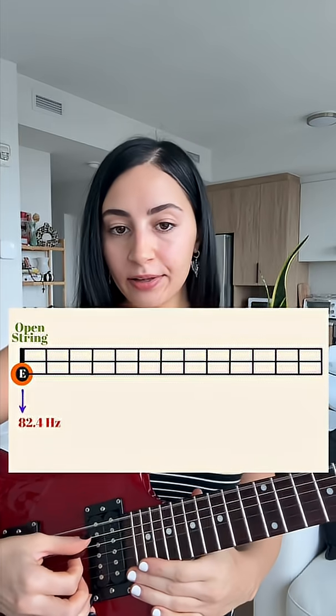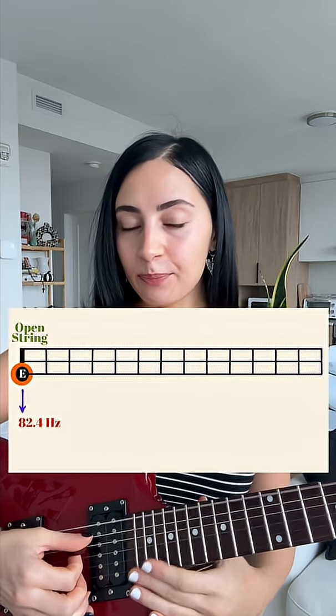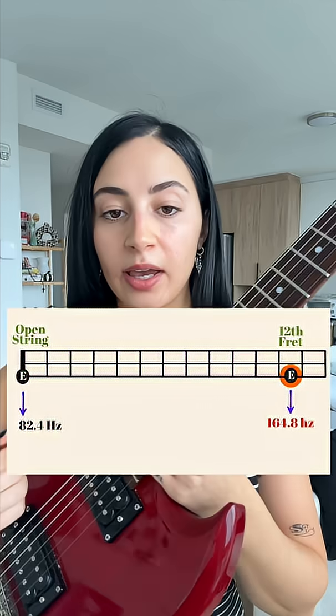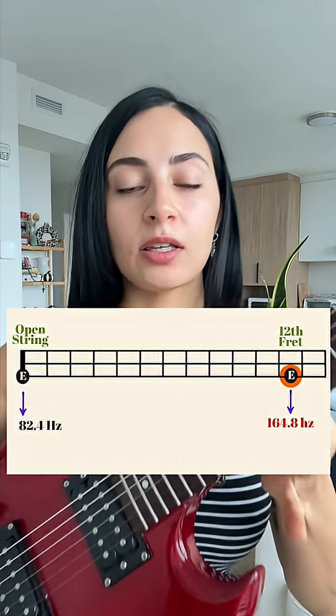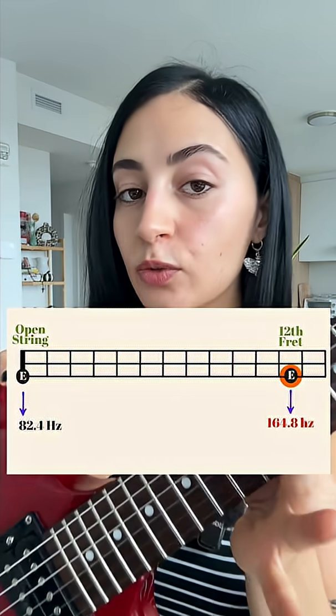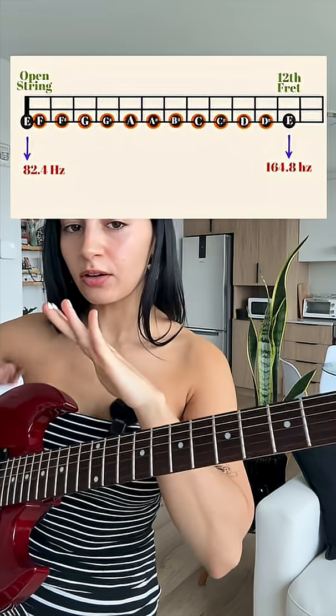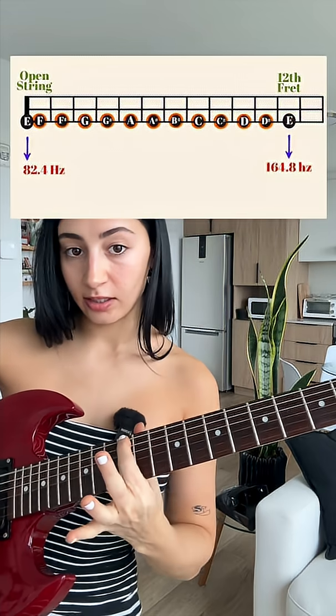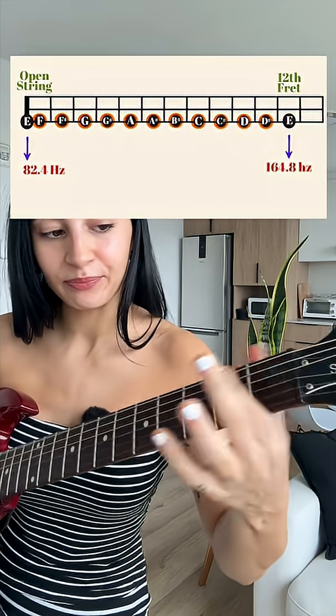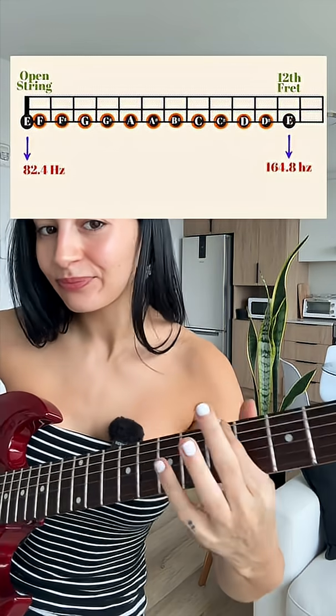An octave is exactly double the frequency of its starting note. Let me show you. This open E note here is 82.4 hertz, and its octave is 164.8 hertz, which is double 82.4, right? And so all the notes between this open E and this E here — its octave — are spaced out according to our equal ratio frequency formula.